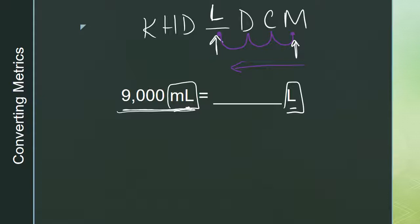I'm going to put my pencil in the milliliter house and draw it moving — one, two, three hops to get to the liter house. It moved to the left, so the number is actually getting smaller because we're dividing by 10. I moved left three times. The thing that really moves is the decimal. In the whole number 9,000, the decimal is at the end. I move it three spaces — one, two, three — and I never leave it a hot mess. My answer is 9.000, or just 9. So 9,000 milliliters is equivalent to 9 liters.